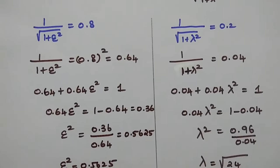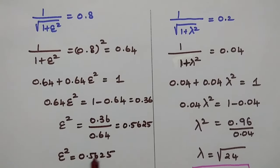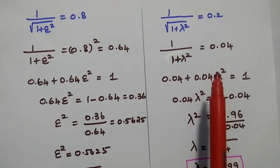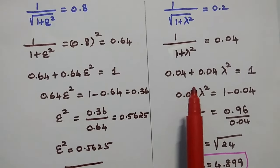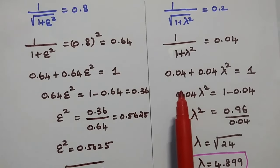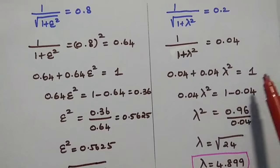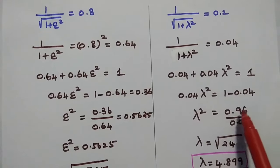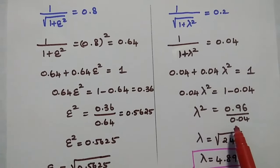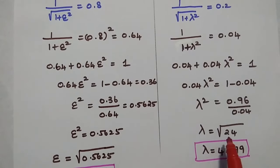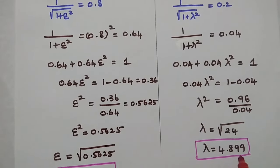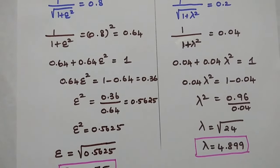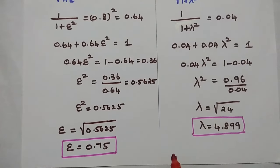Similarly, to find λ: squaring both sides of 1/√(1 + λ²) = 0.2 gives 1/(1 + λ²) = 0.04. Cross-multiplying: 0.04 + 0.04λ² = 1, so λ² = 0.96/0.04 = 24. Therefore λ = √24 = 4.899. We have ε = 0.75 and λ = 4.89.